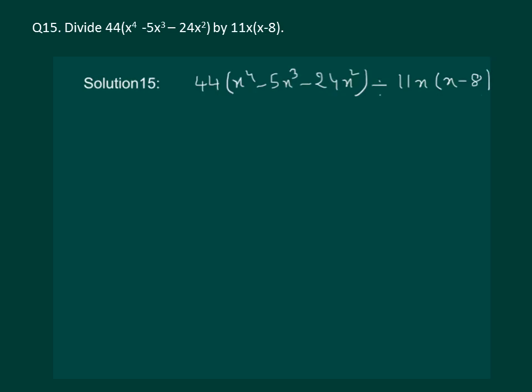Let us read the question. We have to divide 44(x⁴ - 5x³ - 24x²) by 11x(x - 8). It is clear that our denominator is already in the factor form but we can factorize our numerator. So let us start with factorizing our numerator so that the division becomes easier. First thing that we can do is we can take out x² common. Taking out x² common will give us 44x²(x² - 5x - 24). To factorize this expression further we can use our middle term split method.